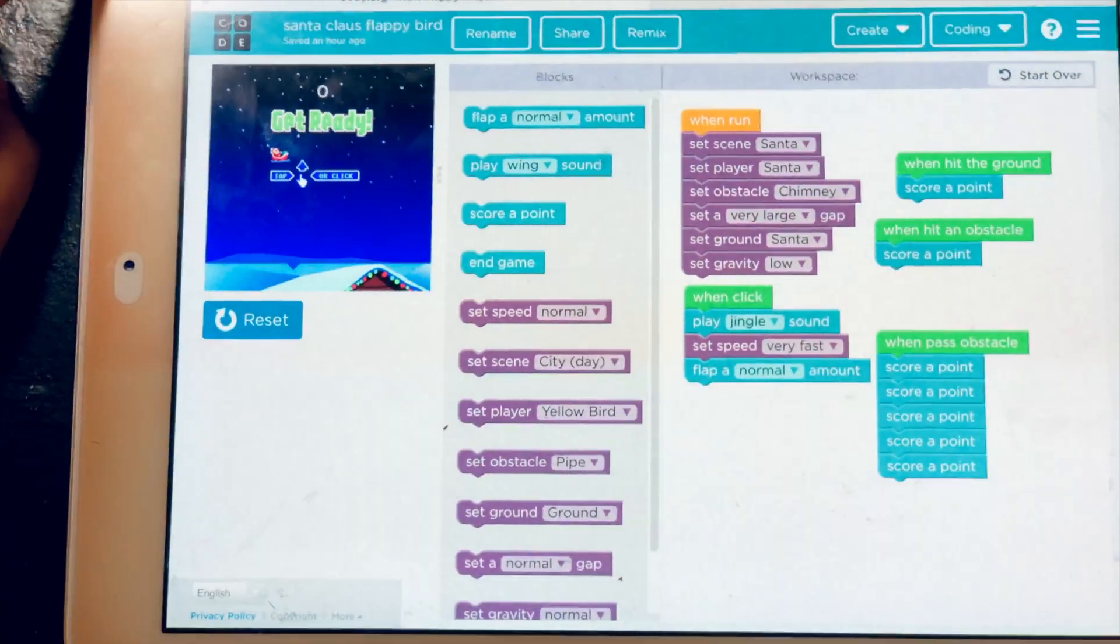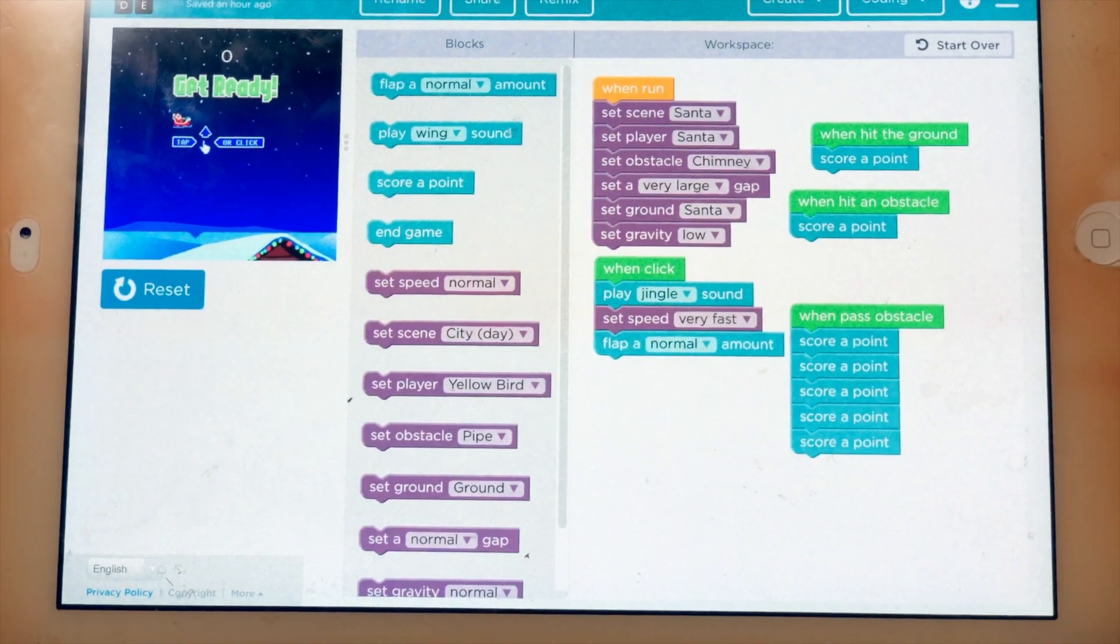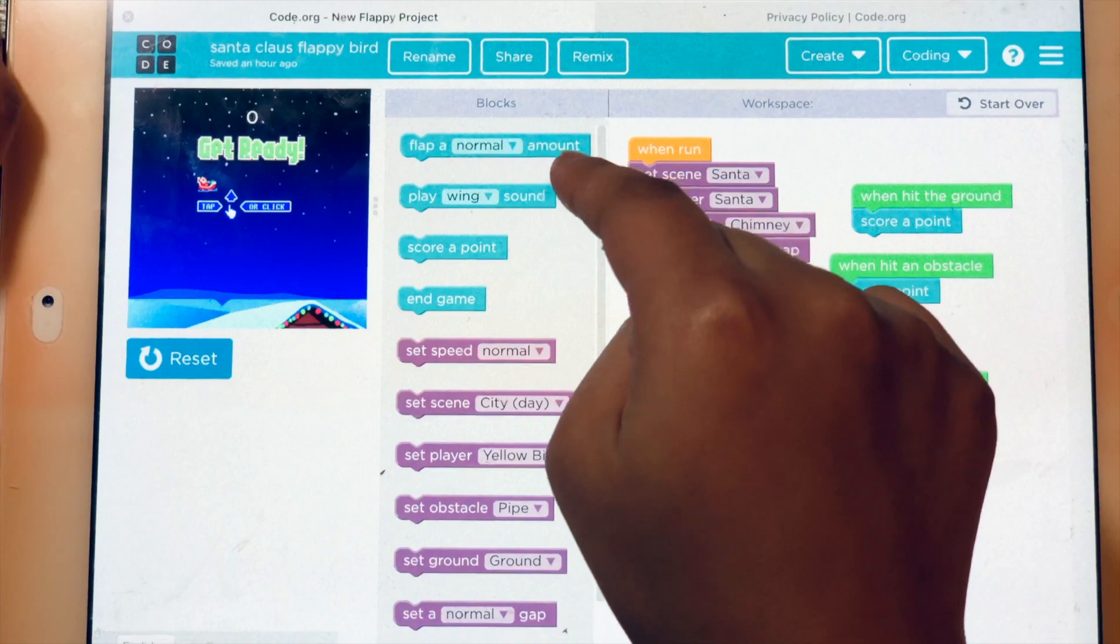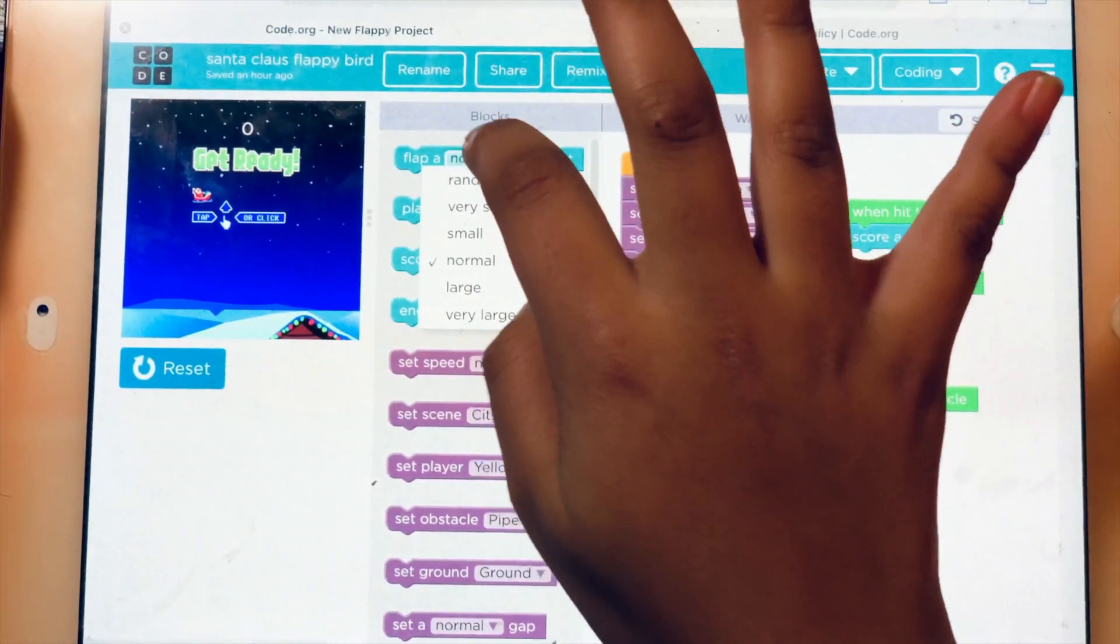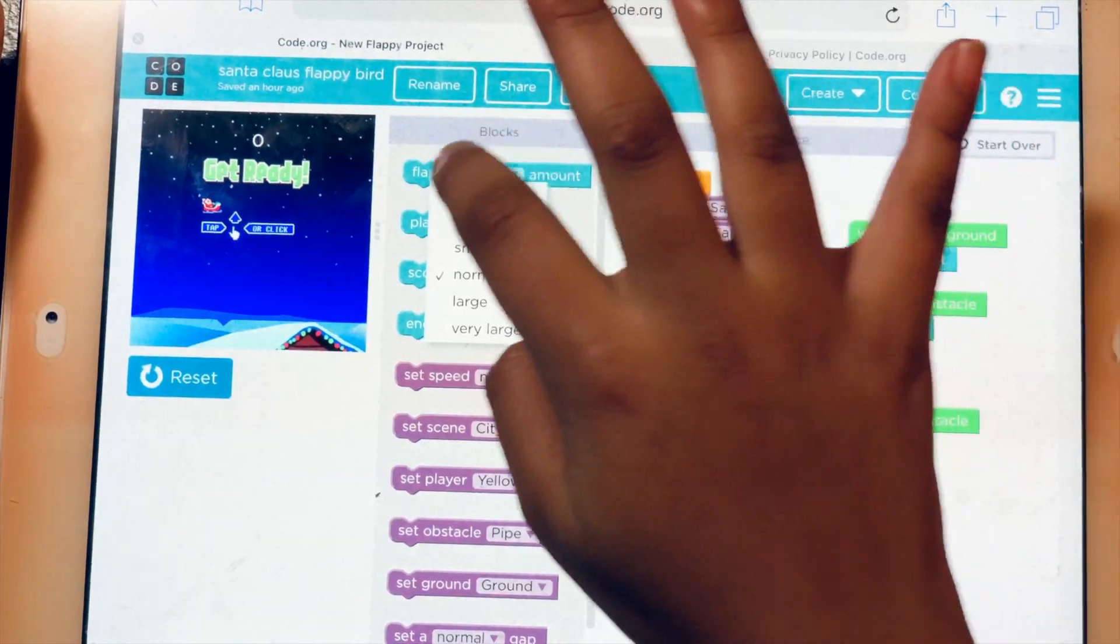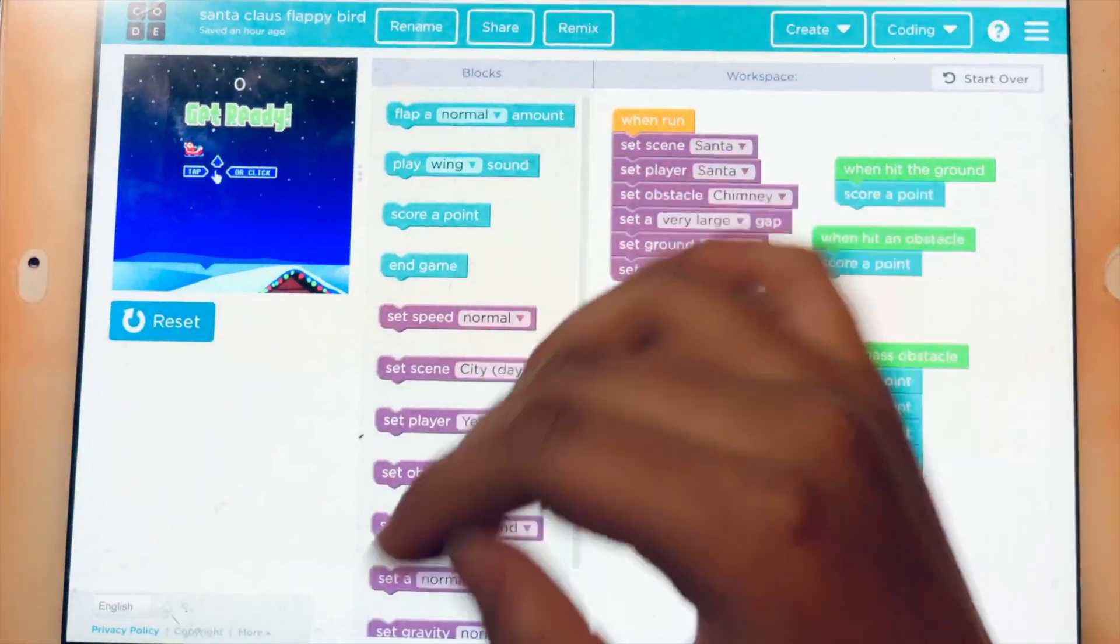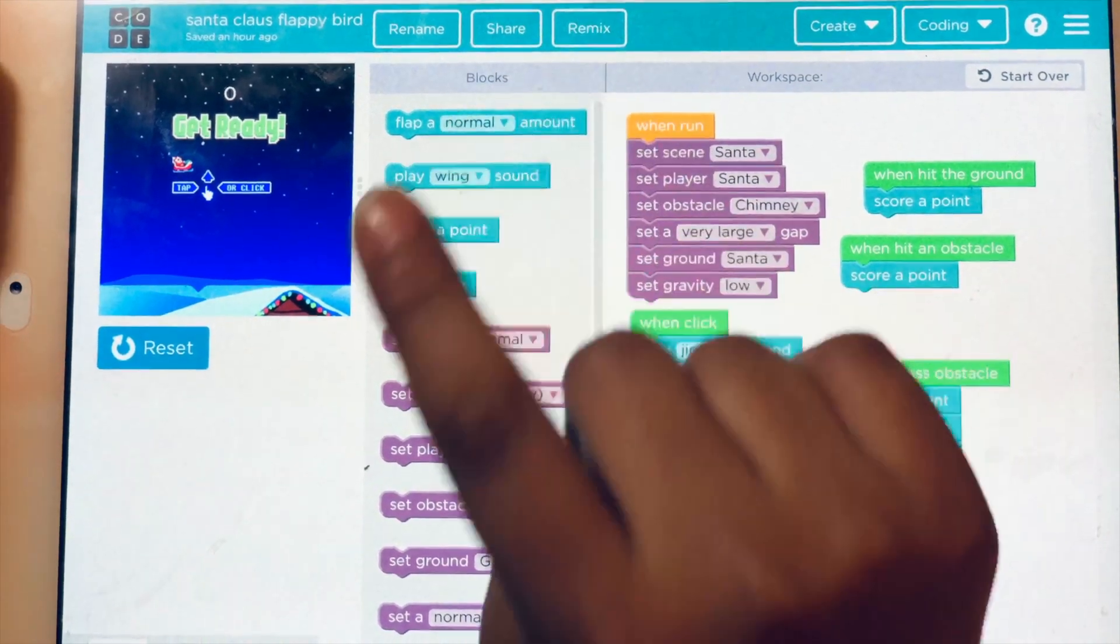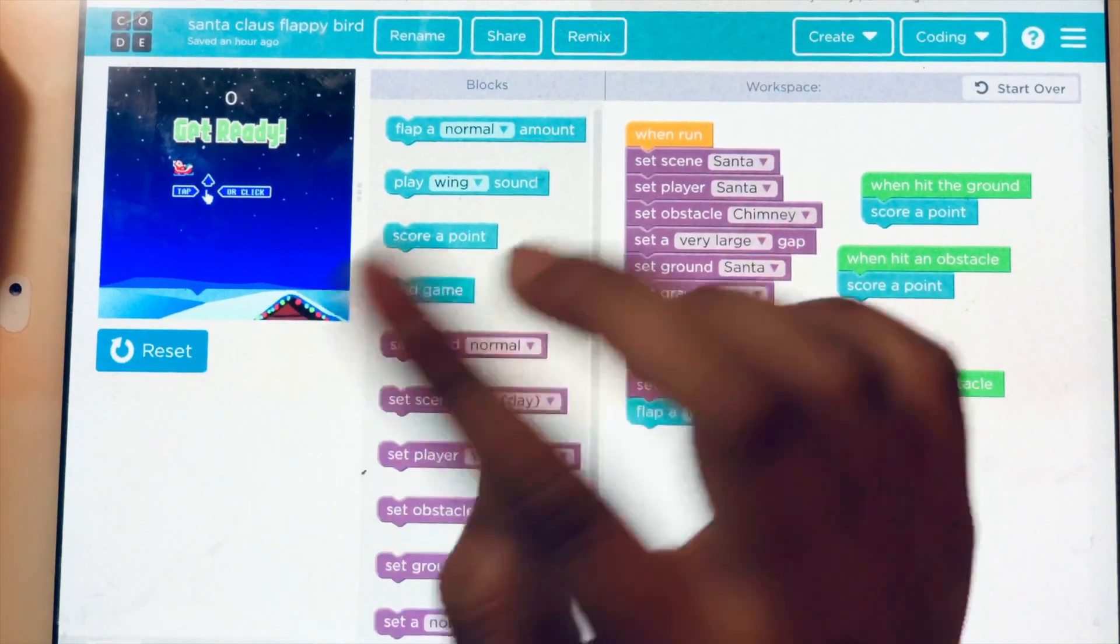I'll be showing you a few important blocks that you need to know, like this one for flapping a normal amount. You can change it to random, very small, small, and so on. Flapping isn't really important, but you still need to make sure it flaps at least a normal amount or very small.